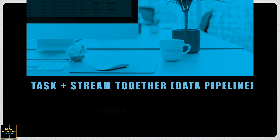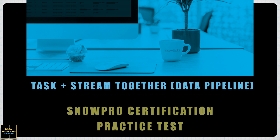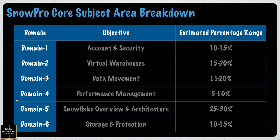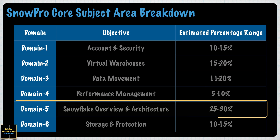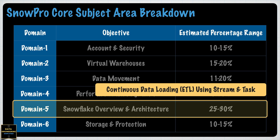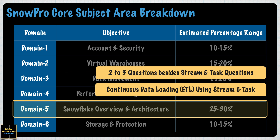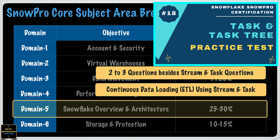Welcome back to my channel Data Engineering Simplified and to this SnowPro certification practice test video series. Task and stream, which help us to build data pipelines in Snowflake, come under Domain 5 with the objective Snowflake Overview and Architecture. The estimated percentage range is 25 to 30% as per the certification guide, and you may expect 2 to 3 questions from the task and stream concept.